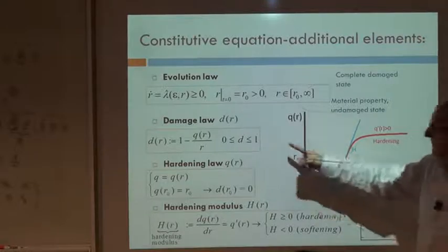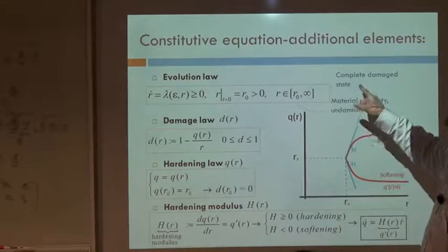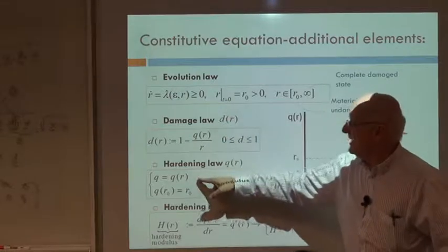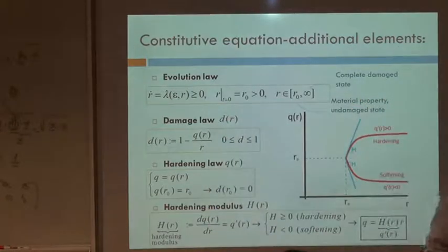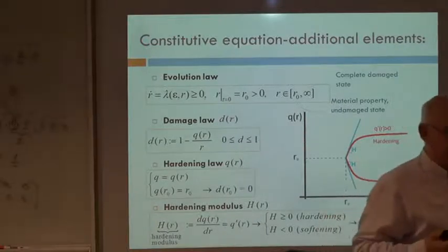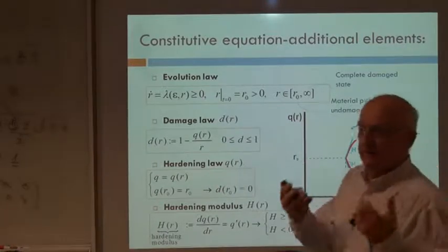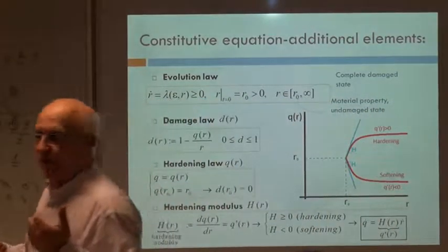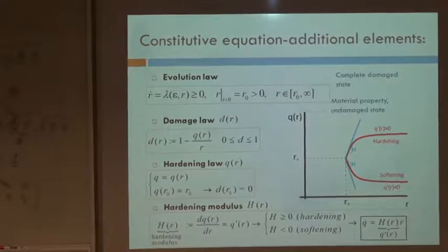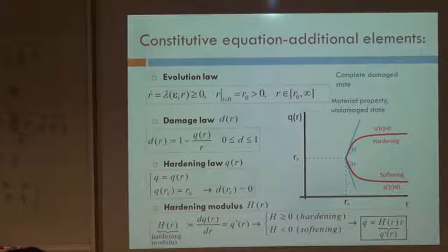Q is a variable called the hardening law, and it controls the hardening of the material. I will introduce later what we understand by hardening or softening. A material hardens when, beyond elasticity, it still has some strength and this strength increases — we say the material hardens.